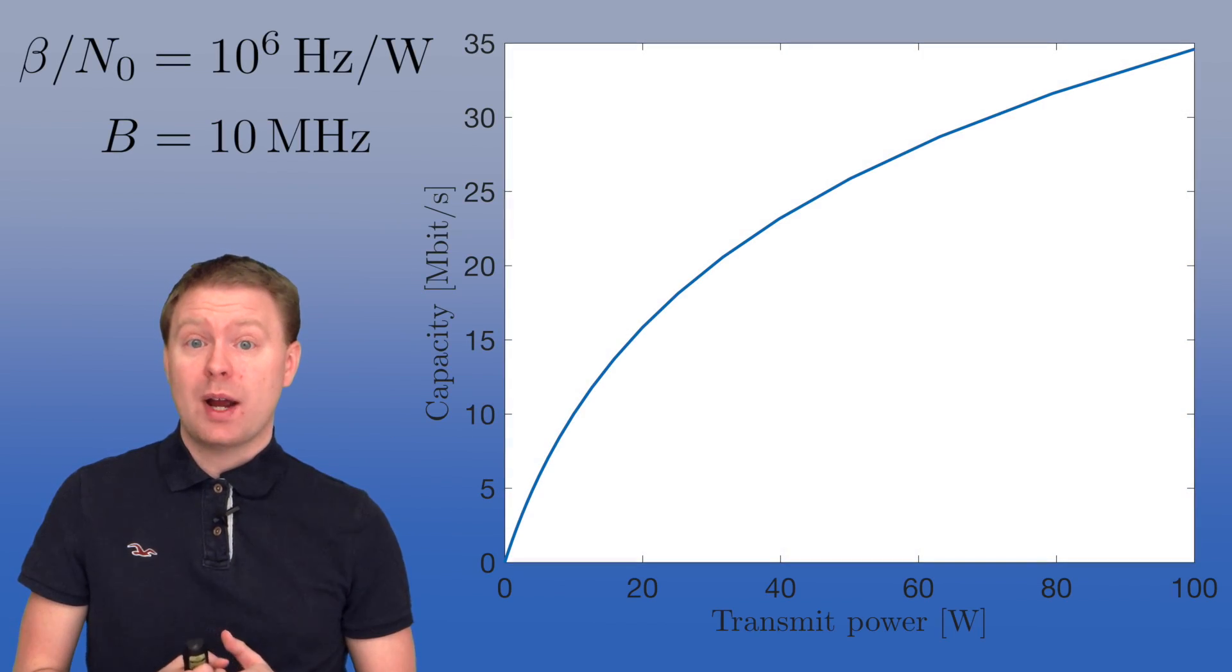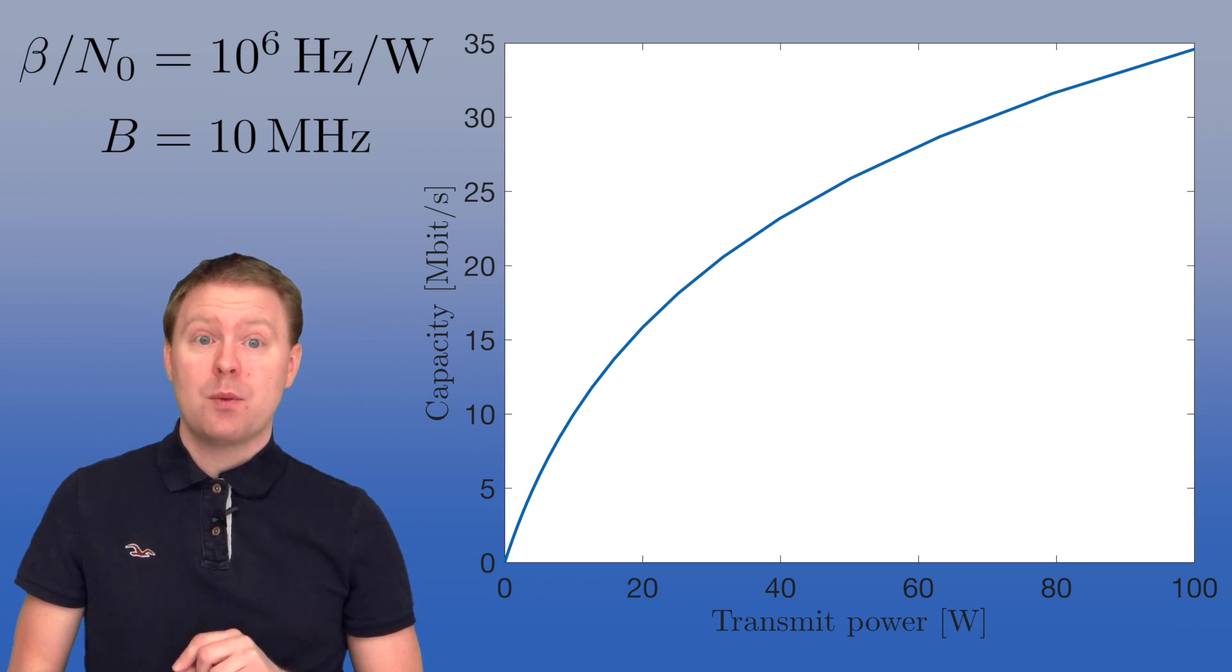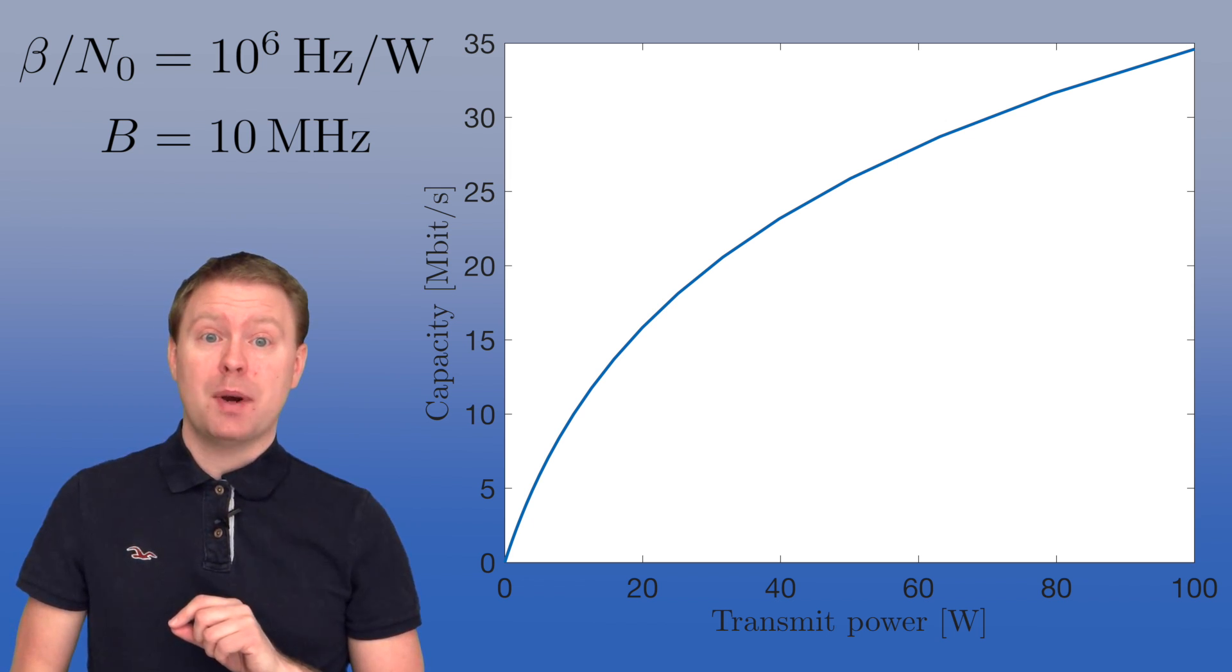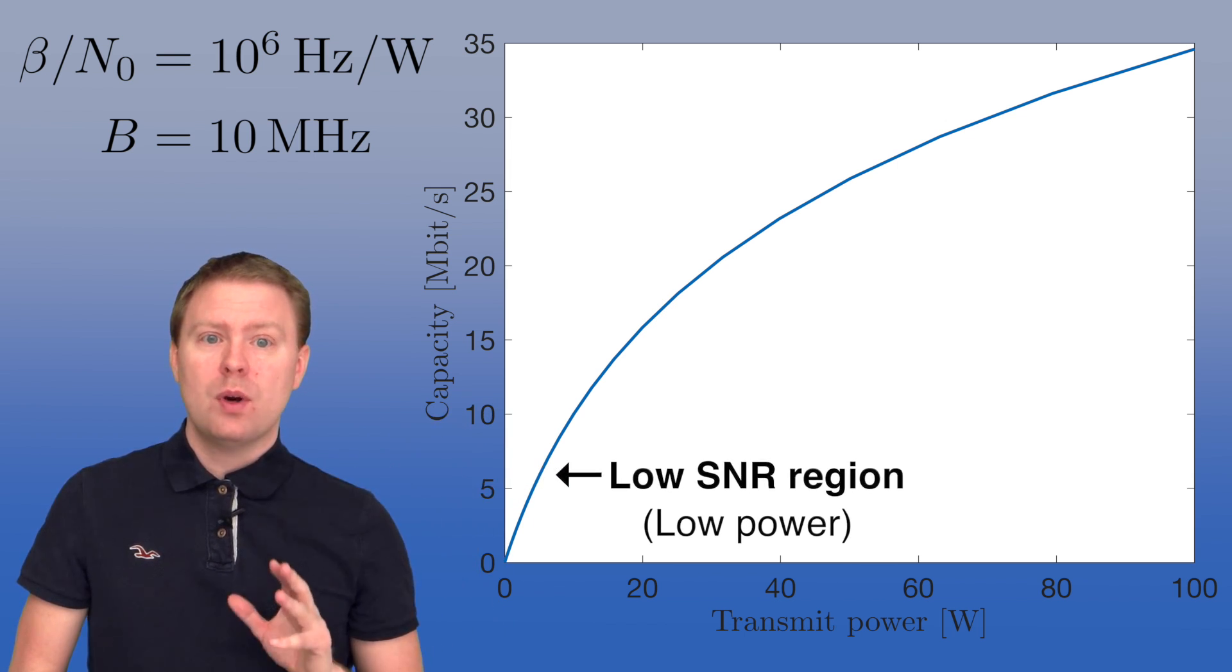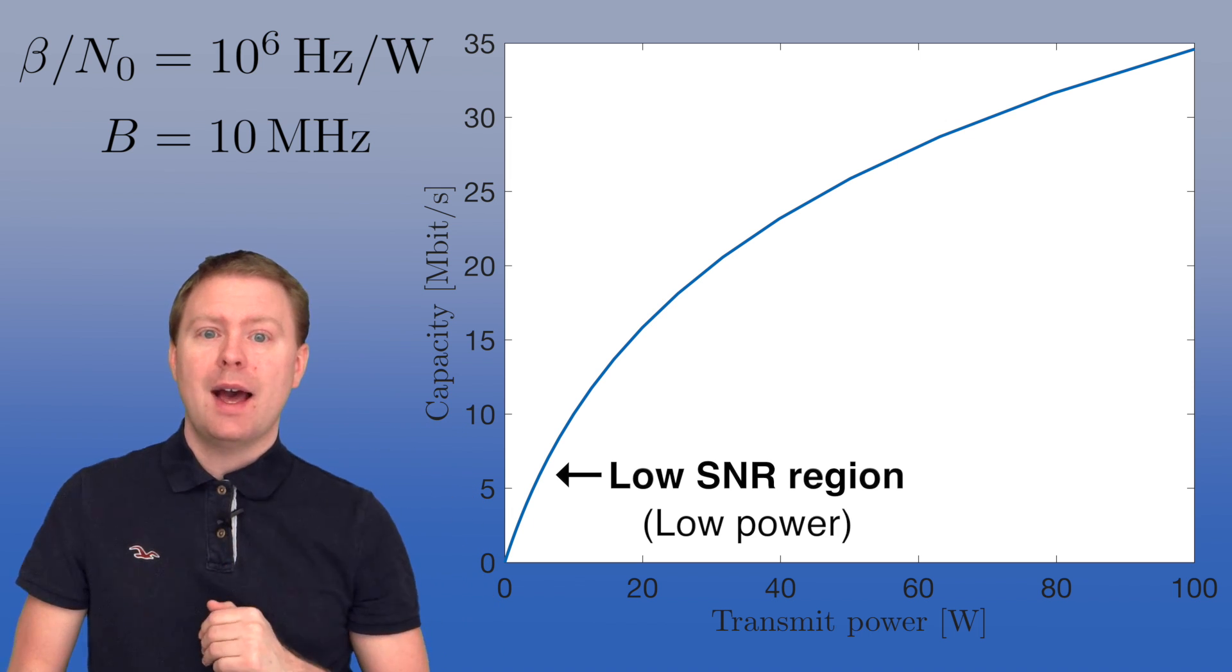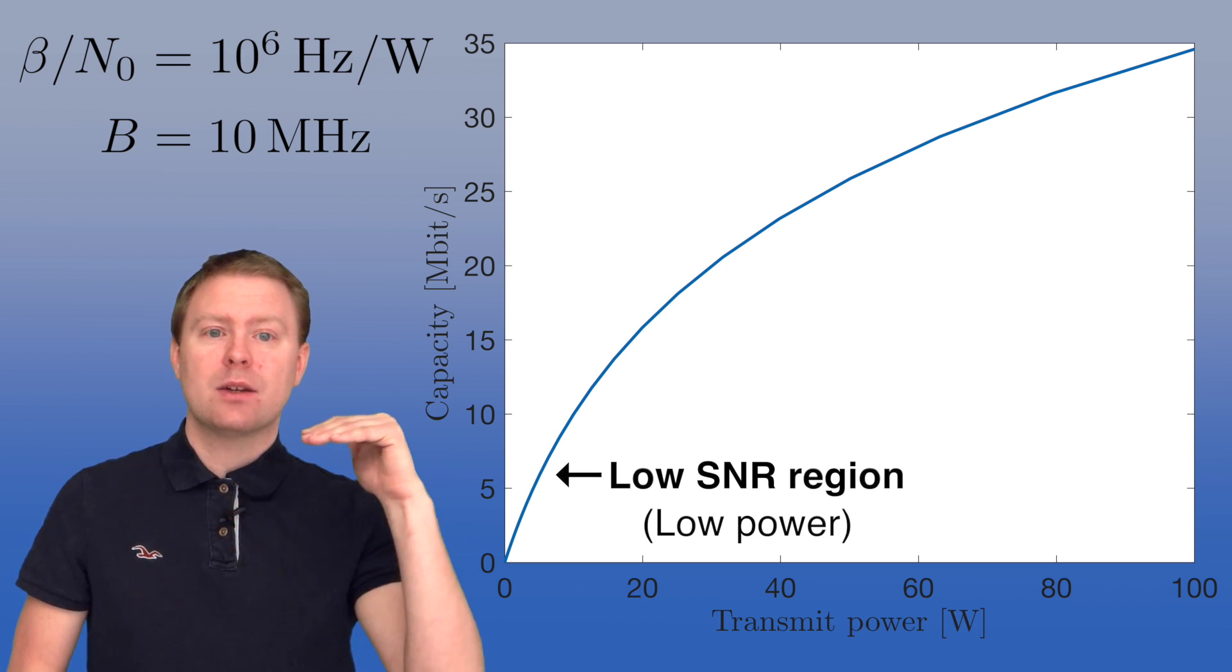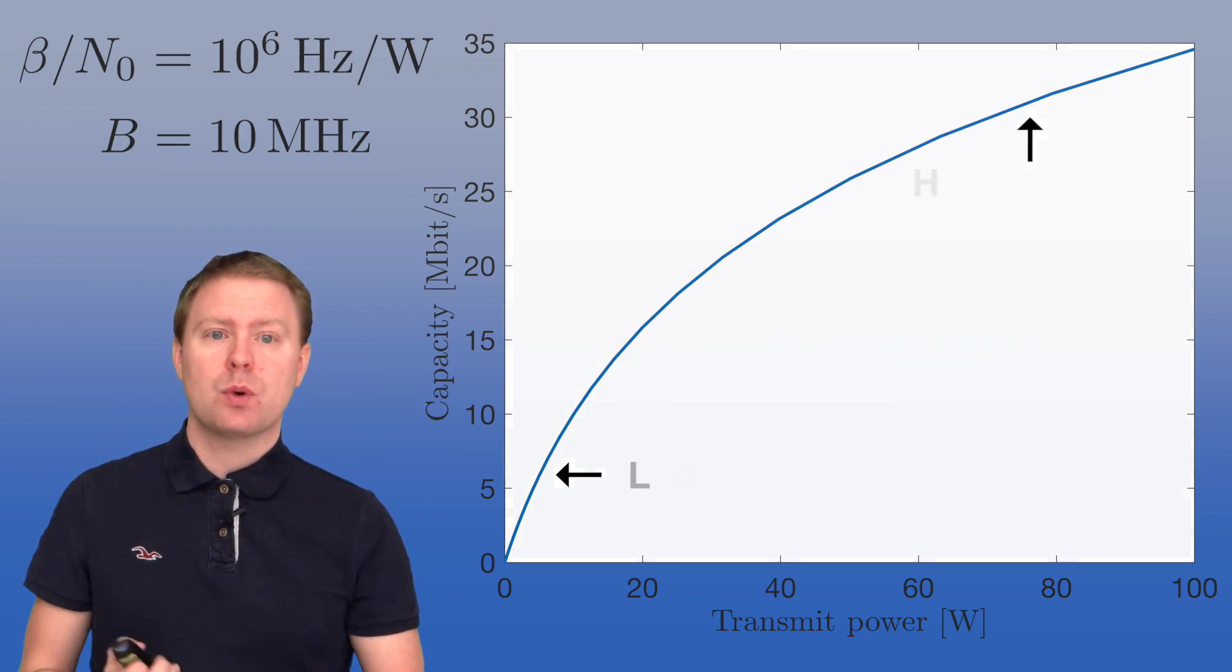We can see this behavior in this graph where on the horizontal axis we have the transmit power and on the vertical axis we have the channel capacity. And we see that as we increase the power, we get a higher and higher capacity. However, when we have a low SNR, we see that the growth rate is almost linear, and then it starts to decay the growth rate and we have more logarithmic behavior at high SNR. So that is what also the theory was supporting.